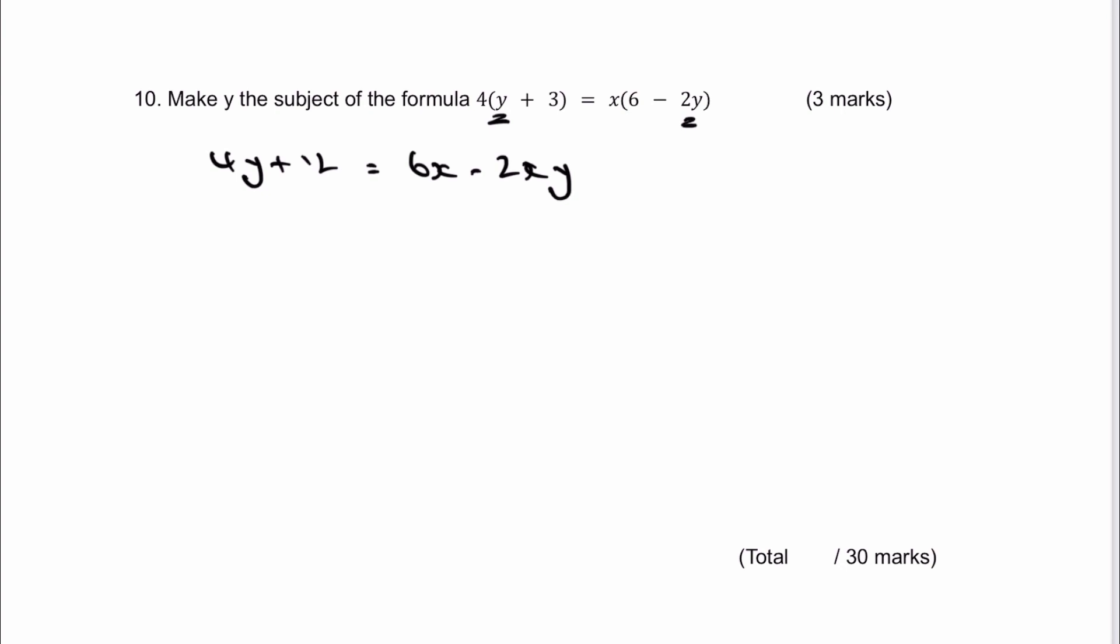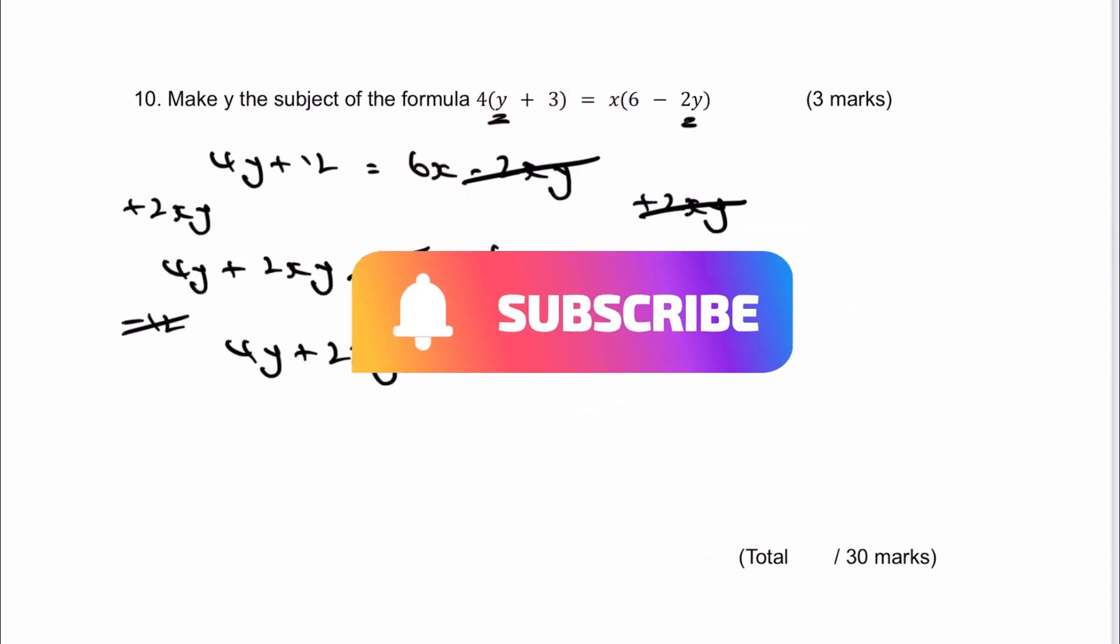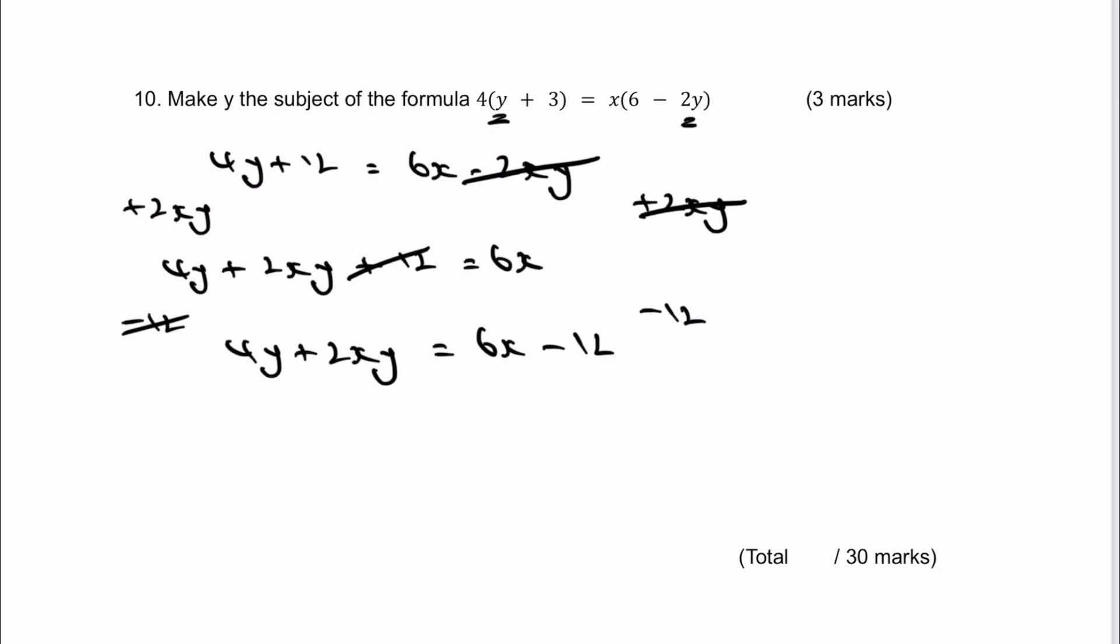Be very careful there because x times 6 is 6x, but x times minus 2y is minus 2xy. I need to get the y terms on the same side. If I plus 2xy to both sides, on the left hand side I get 4y plus 2xy plus 12 equals 6x. Then I need to get the 12 over towards the right hand side. So I'm going to minus 12 from both sides, and I get 4y plus 2xy equals 6x minus 12.